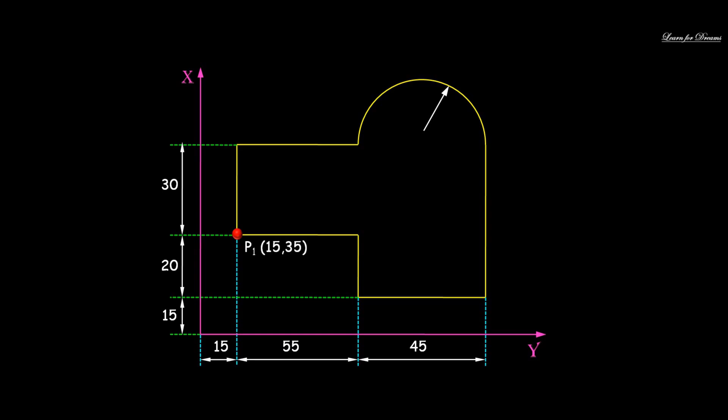Point 1: 15,35. Point 2: 70,35. Point 3: 70,15. Point 4: 115,15. Point 5: 115,65. Point 6: 90,65. Point 7: 65,65. And Point 8: 15,65.